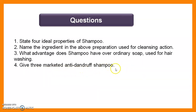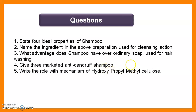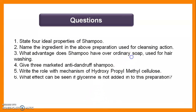Question 4: Name three marketed anti-dandruff shampoos. In the market there are many anti-dandruff shampoos available, including Head & Shoulders, Himalaya Herbal anti-dandruff shampoo, L'Oréal Paris anti-dandruff shampoo, and Pantene anti-dandruff shampoo. Question 5: Write the role and mechanism of hydroxypropyl methyl cellulose (HPMC). HPMC is used as a thickening agent, giving proper thickness and appearance to the preparation, making it effective in a small quantity.